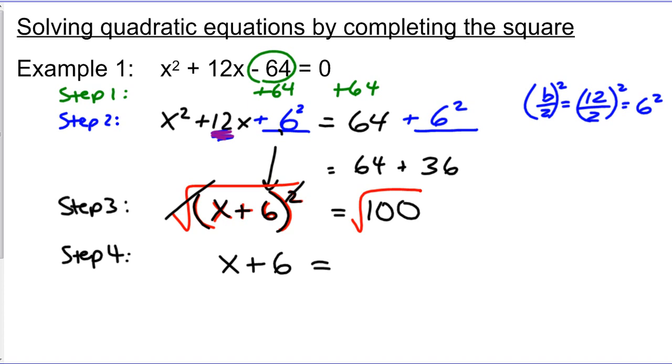And on the right-hand side, this one works out nice. Square root of 100 is 10. Be careful, be careful, be careful. You should be thinking something right now that I missed. When I insert a square root into a problem, what do I have to put in front of it? You're right, plus or minus. So I now have a positive or negative 10.